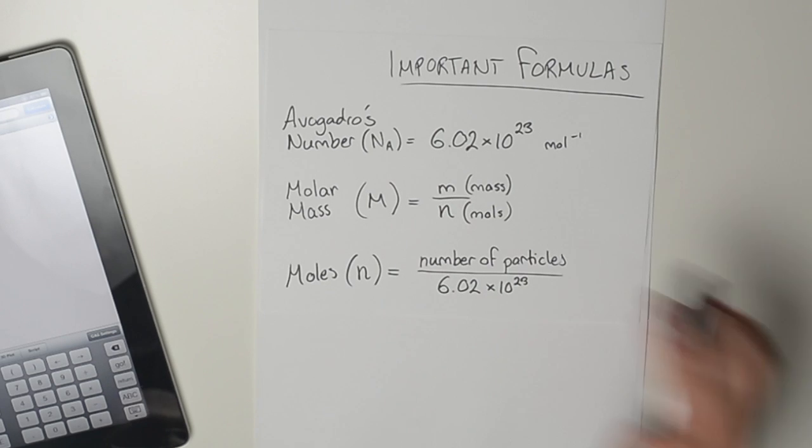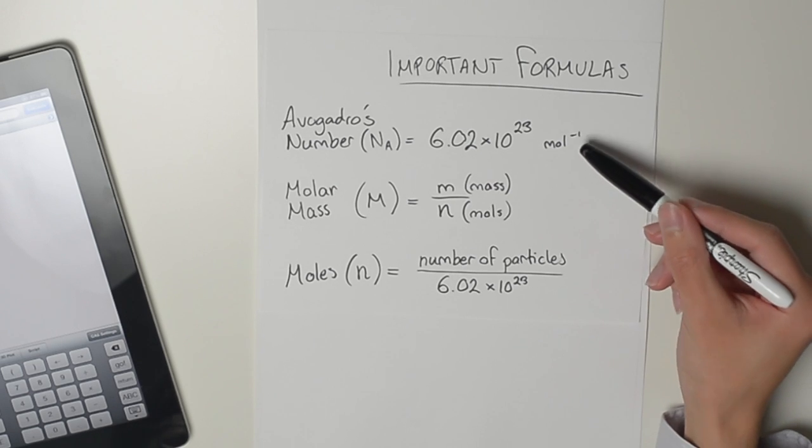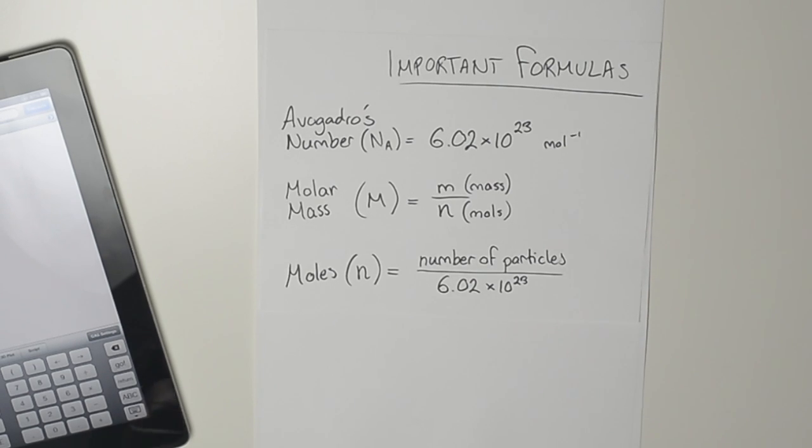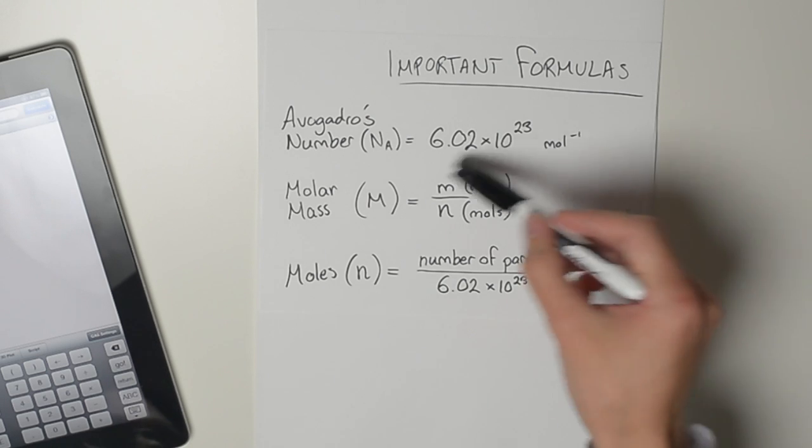I've got a few here. Avogadro's number - you must memorize 6.02 times 10 to the power of 23. That is in per mole. The minus sign just means per mole. For every mole, that's how many you have.